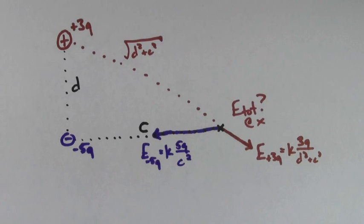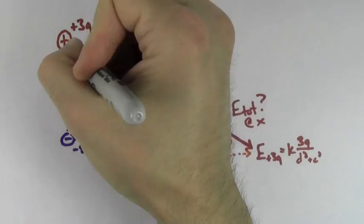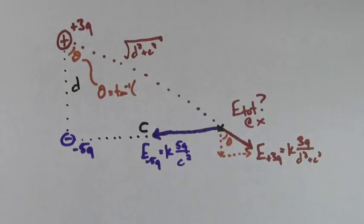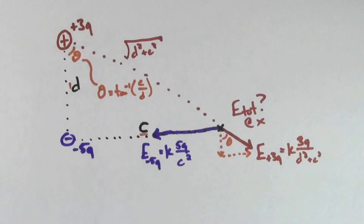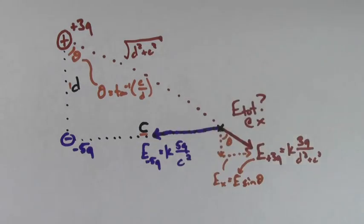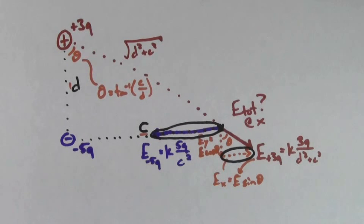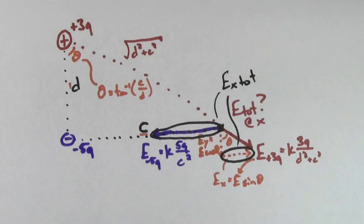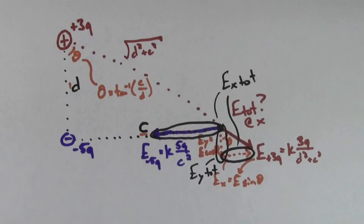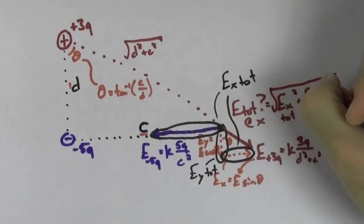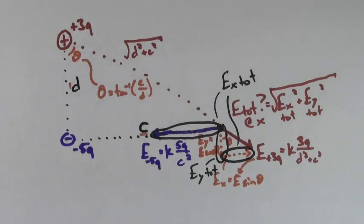Now break up any diagonal vectors into X and Y components. You may have to find the angle involved by using trigonometry like inverse tangent. The horizontal piece is going to be E sine theta and the vertical piece is going to be E cosine theta. Take the X component and subtract the contribution from the negative 5Q charge since that points leftward — this gives you the X component of the total electric field. Since there is only one Y component, that becomes the Y component of the total electric field. Then use the Pythagorean theorem to find the magnitude of the total electric field vector.